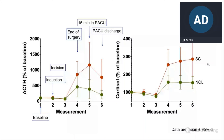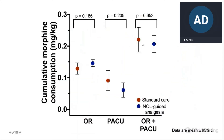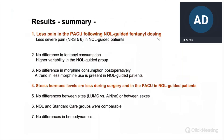Finally, looking at morphine consumption, there was not much difference between morphine consumption in the two groups, despite much less pain in the NOL-guided group. There was a trend towards lesser morphine use in the PACU recovery period in the NOL-guided group. We observed no differences between the two sites, and no differences in results between men and women. In the second trial using fentanyl, there were no differences in hemodynamic events — in fact, hypotensive events hardly ever occurred with fentanyl.